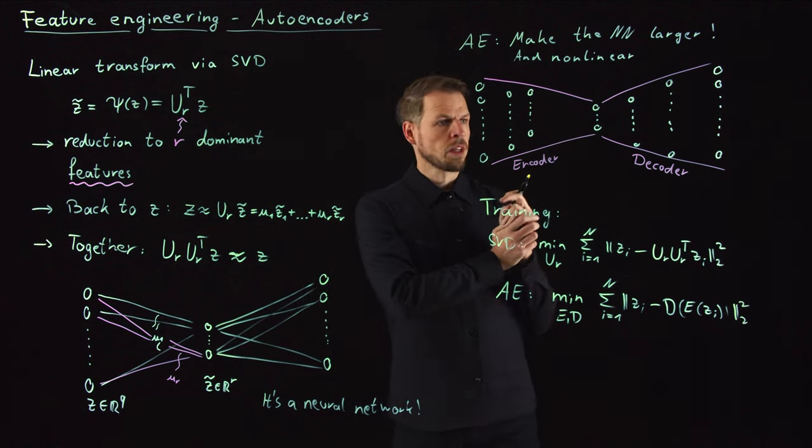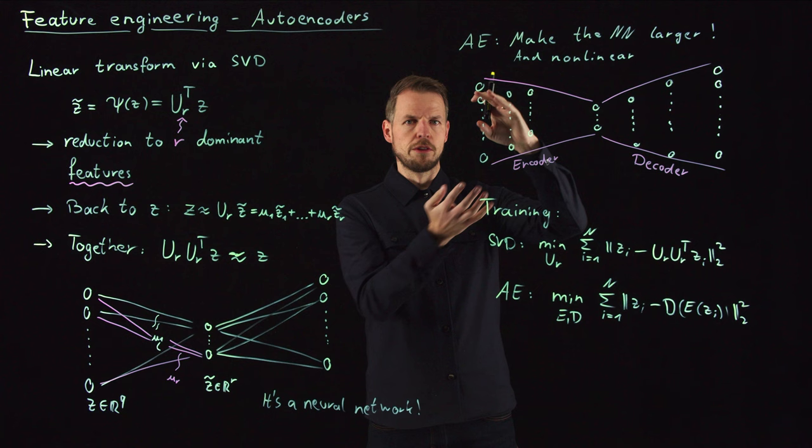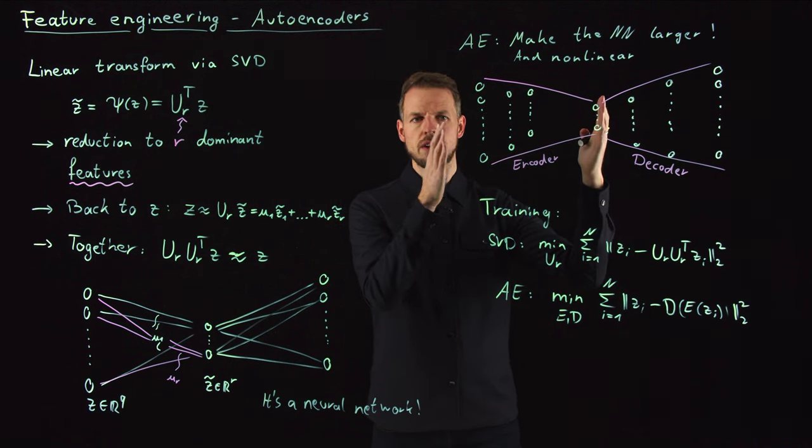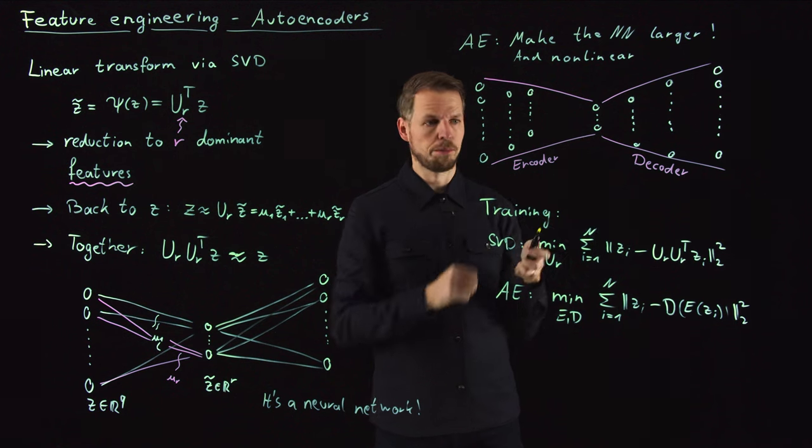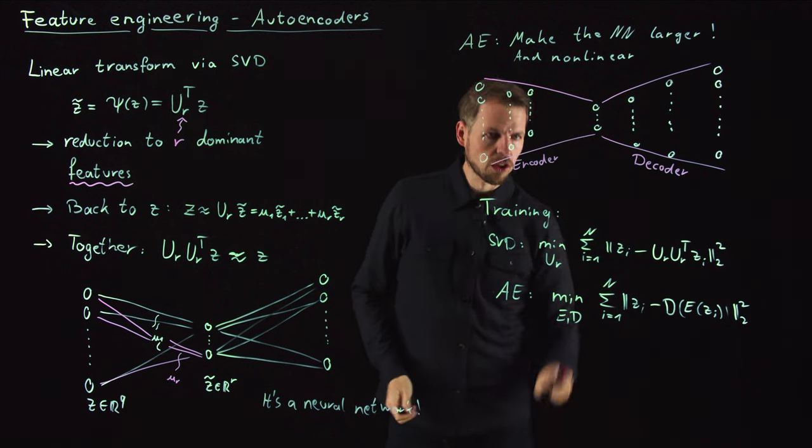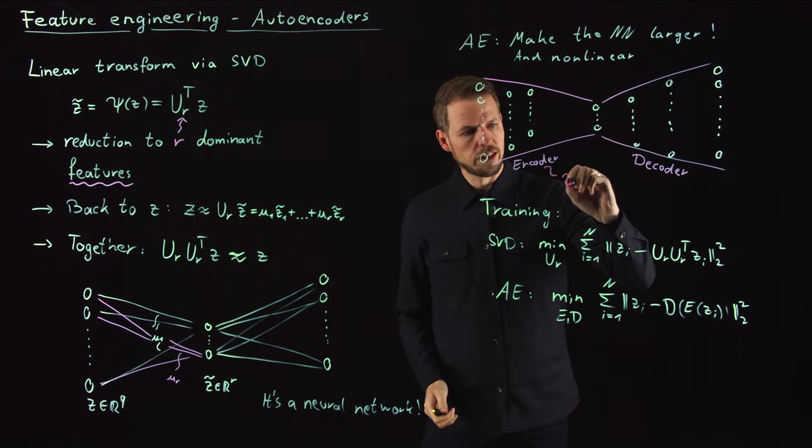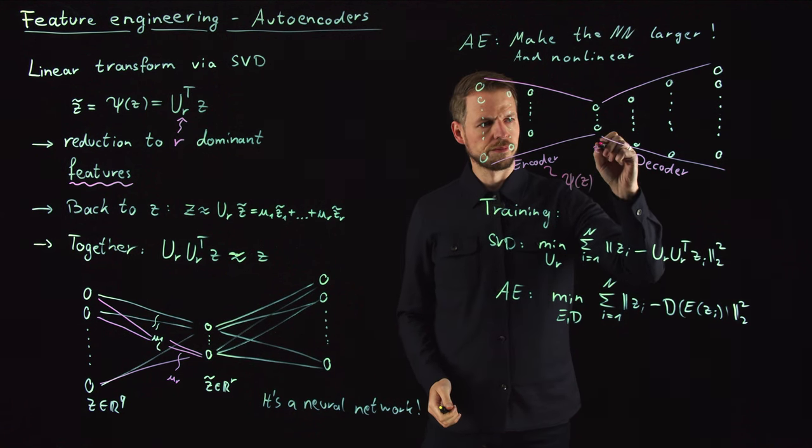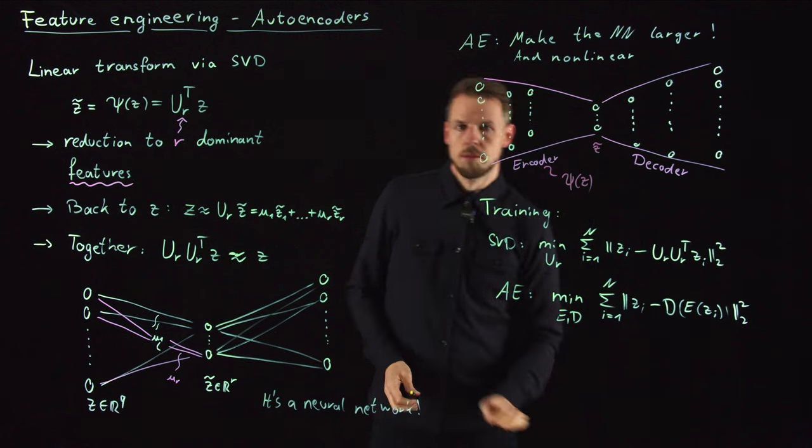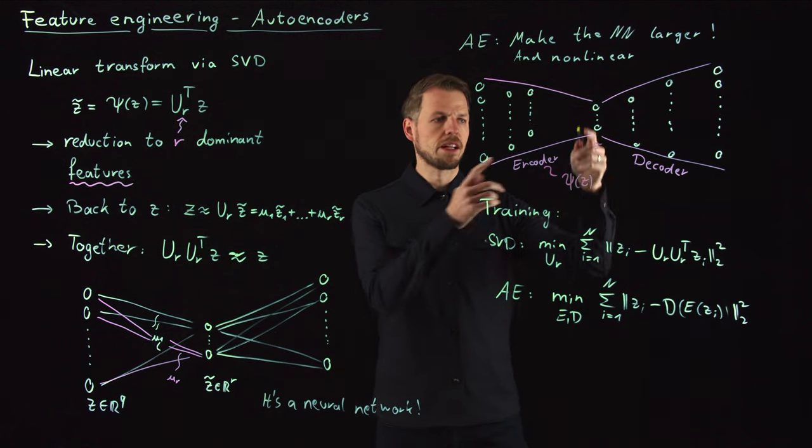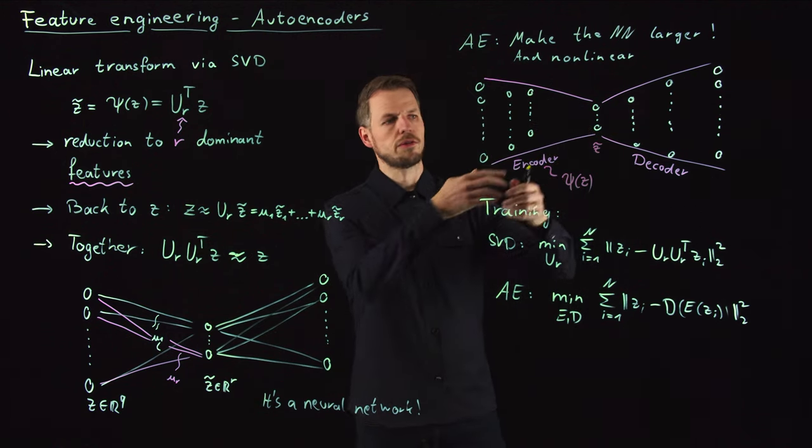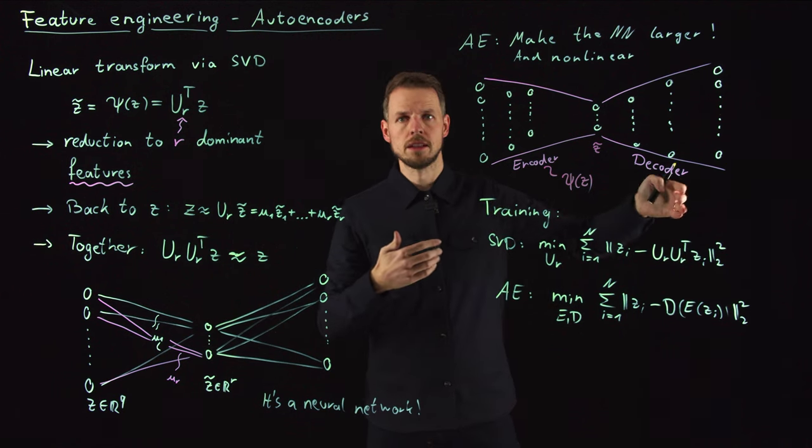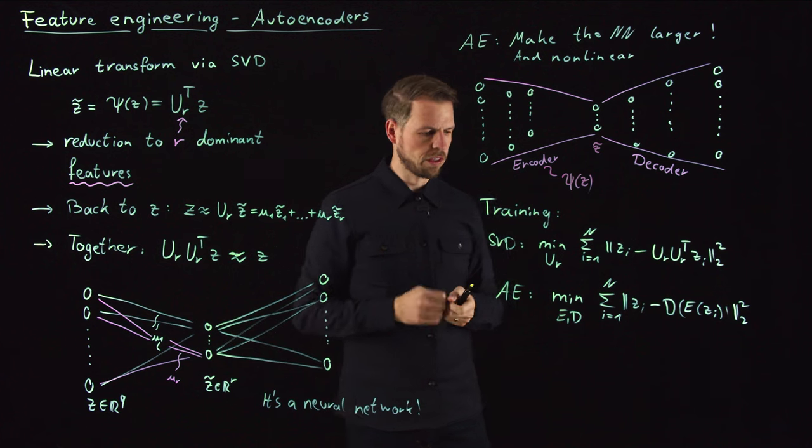So exactly this: encode E of Z, and then decode D of E of Z. Then we minimize this distance. This is a very powerful architecture for feature extraction. The second part is actually not needed in terms of the feature. After we have trained this, usually the first part will serve as our feature matrix Psi. The encoder is what will be our Psi of Z in the end, giving us Z tilde. But for training, you need both of them. If you do some learning of the features or time series time stepping, then you can get back to the original state using the decoder.